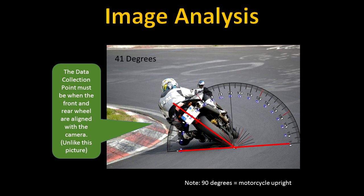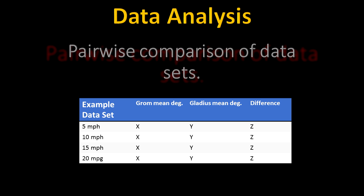As shown here, the image analysis will simply use an overlaid protractor to gain a measurement in degrees. However, this image does not have the front and rear wheels aligned. The test images will be measured at the point where both wheels align. The data analysis will show the lean angle difference, if any, of the different bikes at the various speed marks.